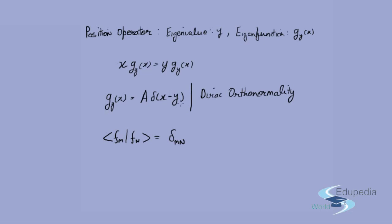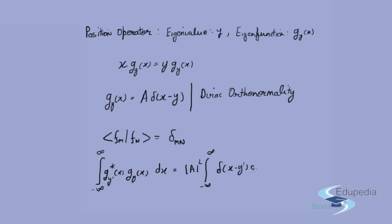For a continuous index, we have Dirac orthonormality. The inner product ⟨g_{y'} | g_y⟩ = ∫_{−∞}^{∞} g_{y'}*(x) · g_y(x) dx equals |a|² ∫_{−∞}^{∞} δ(x − y') · δ(x − y) dx, which evaluates to |a|² δ(y − y'). For normalization we take a = 1, making the result simply δ(y − y').